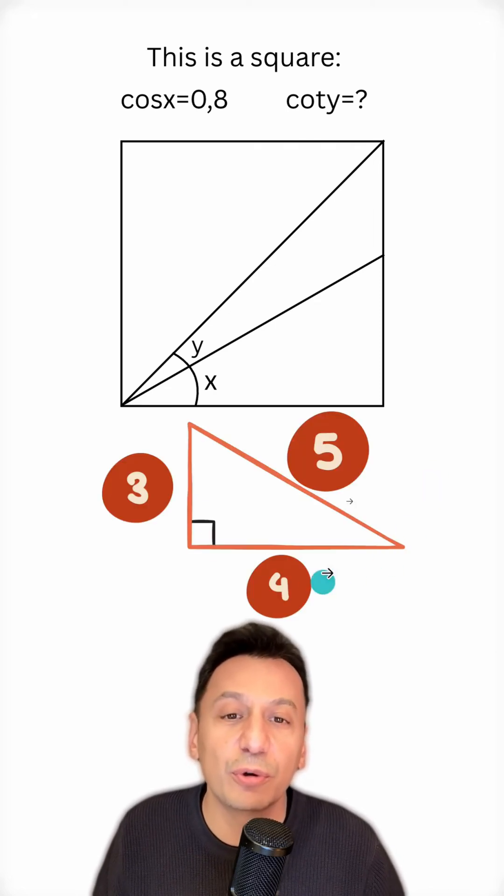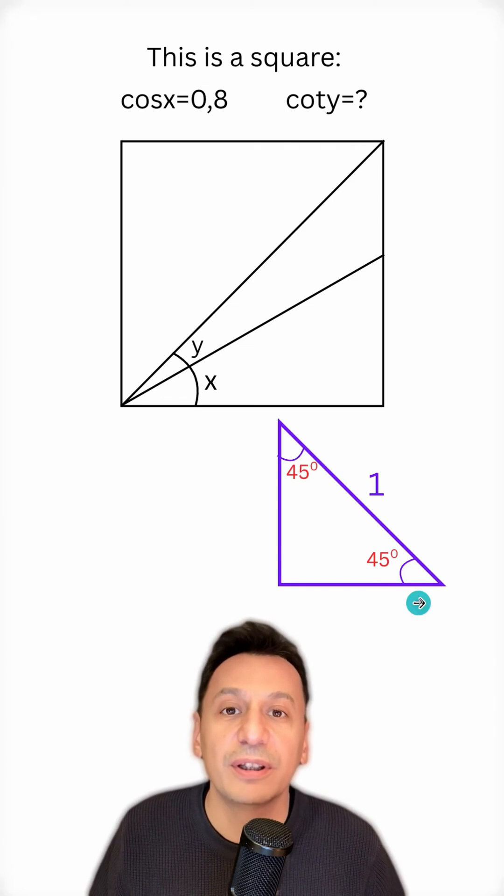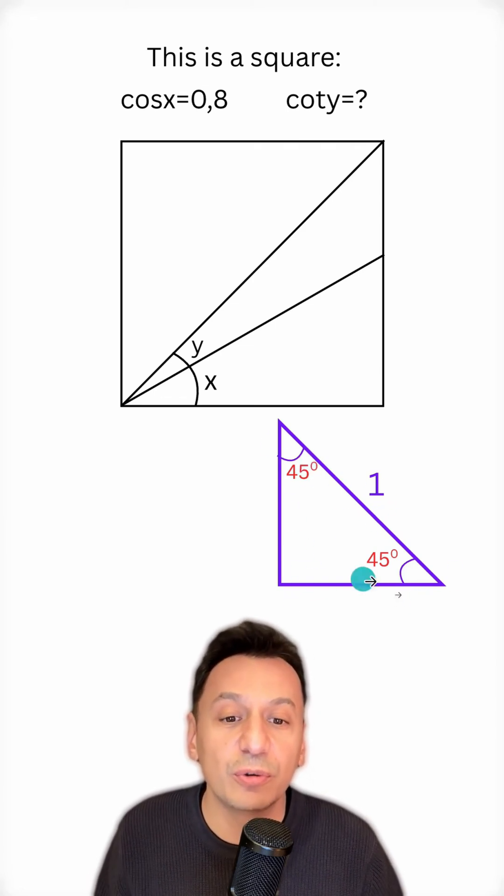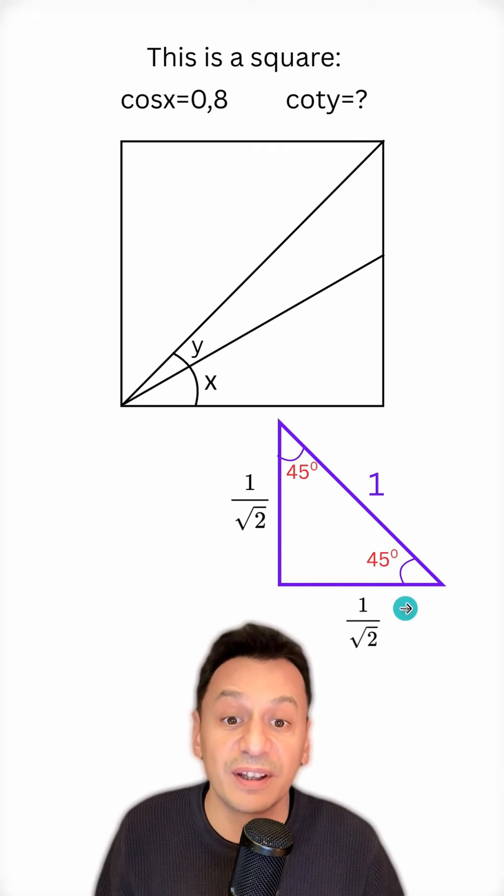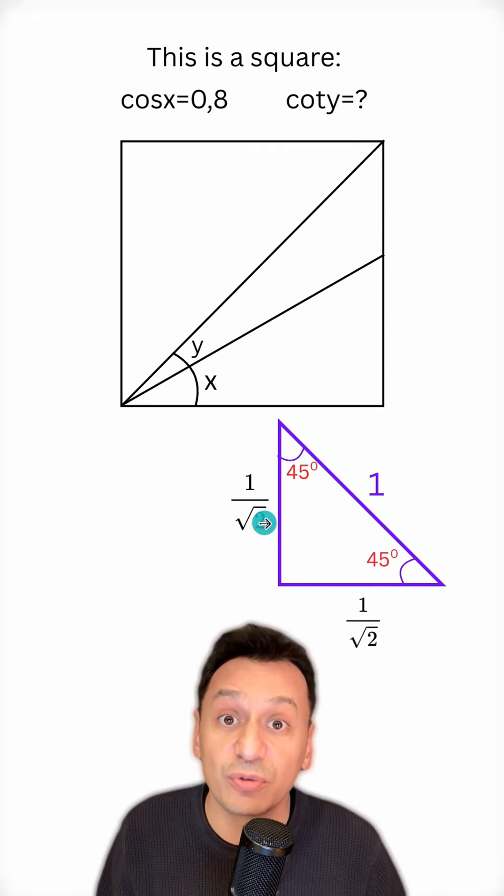One of these is the special 3-4-5 triangle, and the other is that in an isosceles right triangle, the hypotenuse is root 2 times the length of the legs that meet at the right angle. So if this side is 1, the legs that meet at the right angle are 1 over root 2.